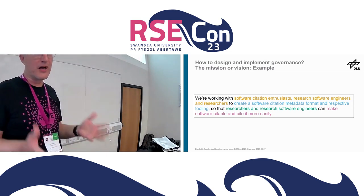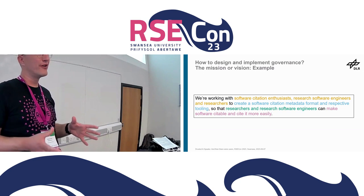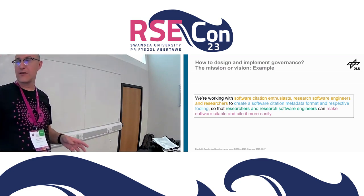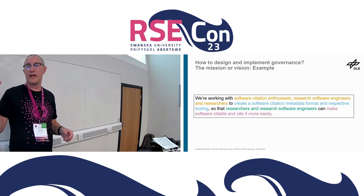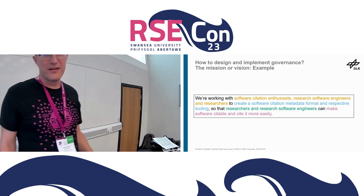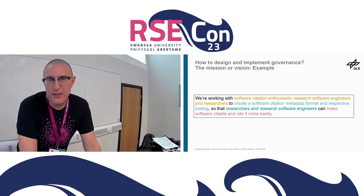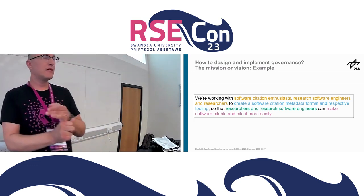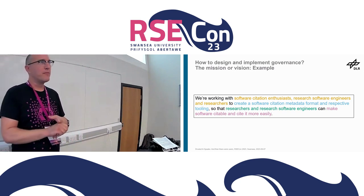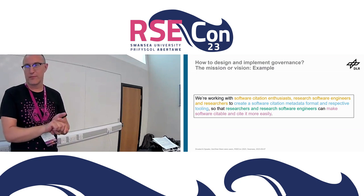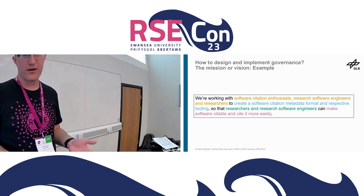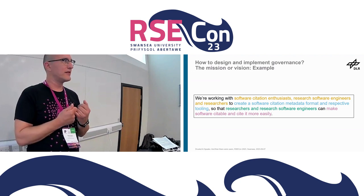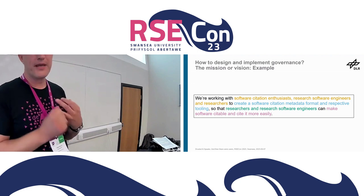A very useful thing I found about this simple exercise is that it makes clear who the roles are for your governance and project. In the case of CFF, this would be software citation enthusiasts, research software engineers, and researchers — with researchers and RSEs also as the audience. All of these people can contribute to CFF subprojects such as the schema, documentation, and tooling; some may become maintainers of one or more subprojects; and all can be users. This gives us at least three roles: contributors, maintainers, and users.